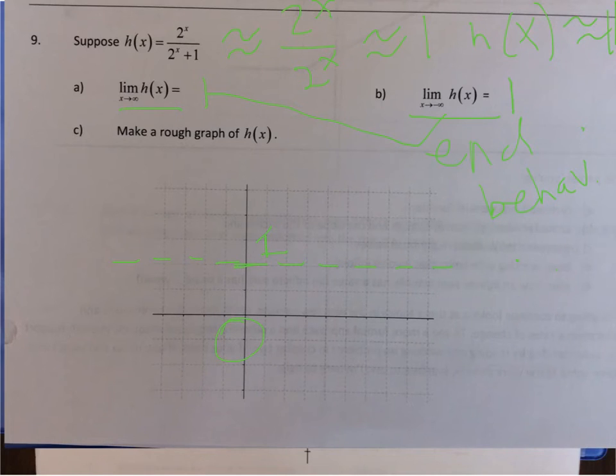Well, what is h(0)? h(0) would be 2^0, which is 1, divided by 2^0, which is 1, plus 1, so it's a half. So at 0, I'm going to have a point here.